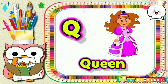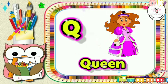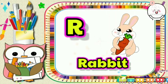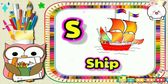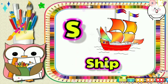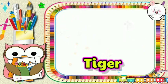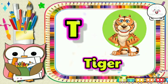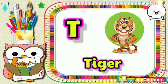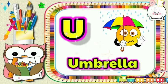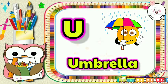Q for queen, R for rabbit, S for sheep, T for tiger, U for umbrella.